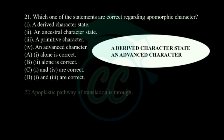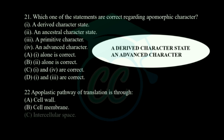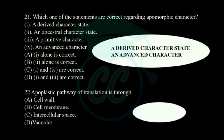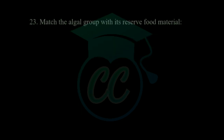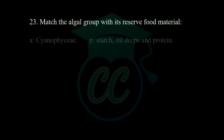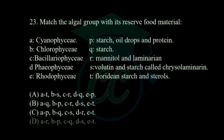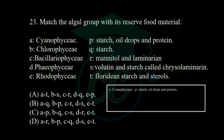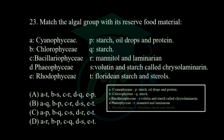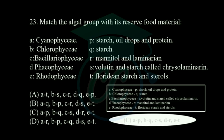Next question: apoplastic pathway of translocation is through — options: cell wall, cell membrane, intercellular spaces, and vacuoles. The apoplastic pathway is through cell wall. Next question: match the algal group with reserve food material. Cyanophyceae: starch, oil drops, and protein; Chlorophyceae: starch; Bacillariophyceae: volutin and starch; Phaeophyceae: mannitol and laminarin; Rhodophyceae: floridean starch and steroid. The correct answer is option C.